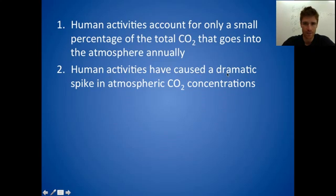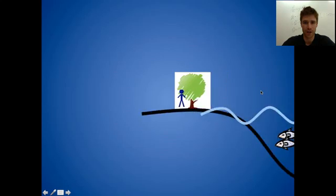By dramatic spike I mean that CO2 was roughly constant for a few thousand years, and then all of a sudden it has gone up by about 40% in the atmosphere since the Industrial Revolution. We're expecting it to approximately double from its previous concentrations by the middle of this century. So that is a pretty dramatic spike. So how is it possible that number two and number one can be true at the same time? In order to understand this we need to get a better understanding of the Earth's carbon cycle.